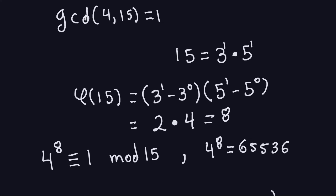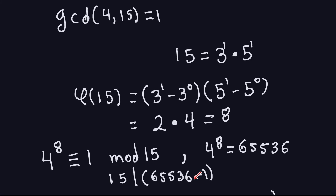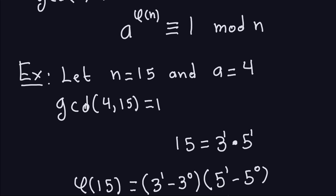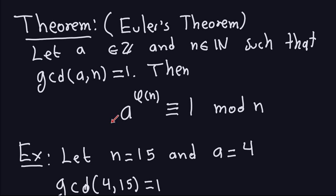How do we know that 65,536 is congruent to 1 modulo 15? By definition, 15 must divide 4^8 minus 1, that is 65,536 minus 1 = 65,535. And you can check that 65,535 is divisible by 15. So this confirms the theorem works for this example. That's Euler's theorem — a key part of the public key cryptography algorithm we'll see later.